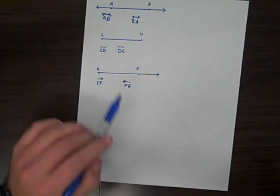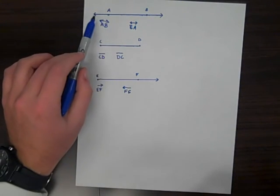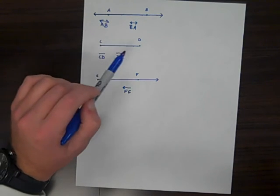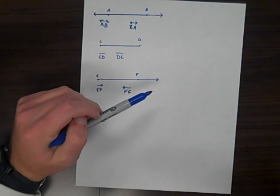So with these three figures, there's two names for each. Keep in mind that lines go forever in both directions. Line segments start at a point and end at a point. Rays start at a point and continue forever.